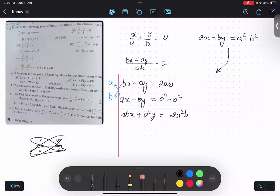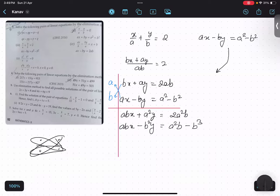And in the second equation it will be ABx minus B²y. Is this thing clear? Yes.